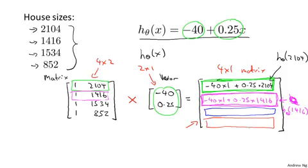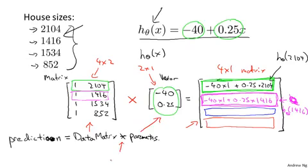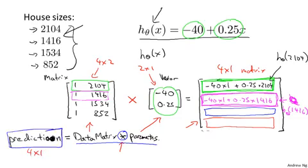When you implement this in software, you can write this in one line of code: prediction equals data matrix times parameters, where data matrix is the matrix of house sizes and parameters is the coefficient vector, and this multiplication is matrix-vector multiplication. If you implement this one line of code — assuming you have an appropriate library — then prediction becomes this 4 by 1 dimensional vector that gives you all the predicted prices.